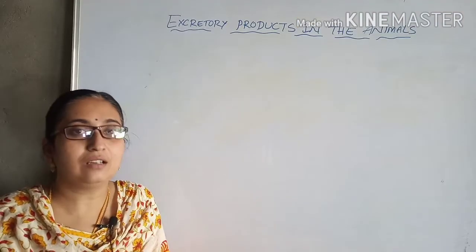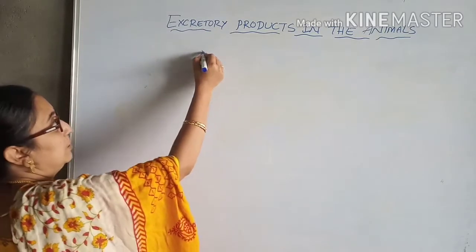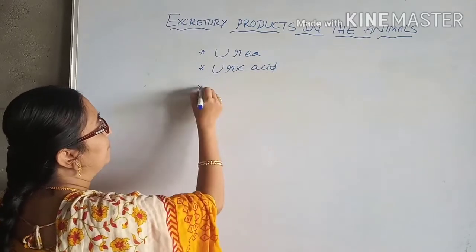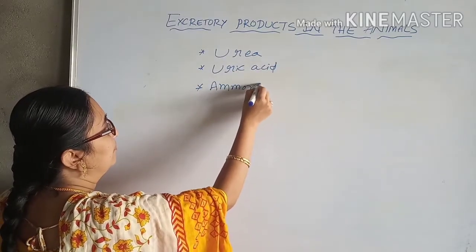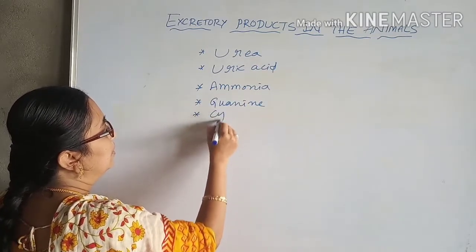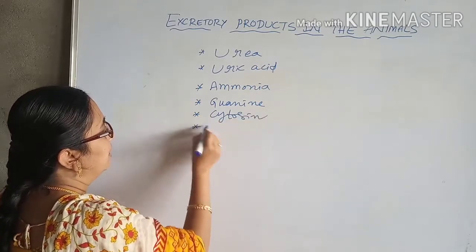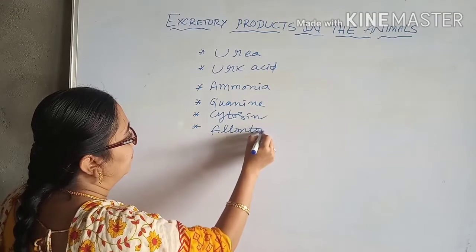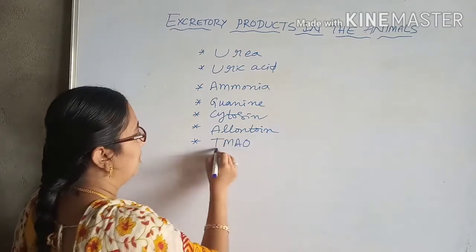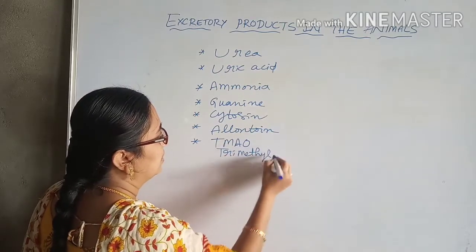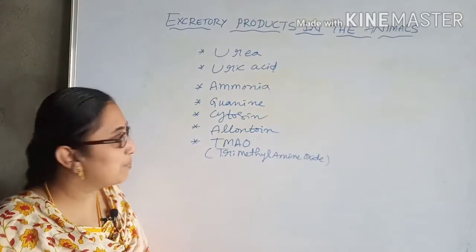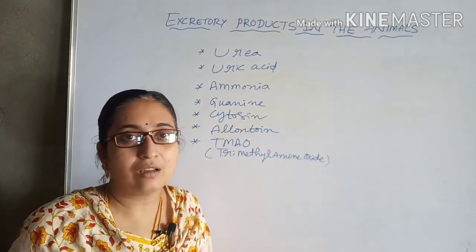The excretory products produced in animals are urea, uric acid, ammonia, guanine, cytosine, allantoin, and in some organisms trimethyl amine oxide — also called TMAO — which is found in the case of fishes. These are the main excretory products produced in organisms.